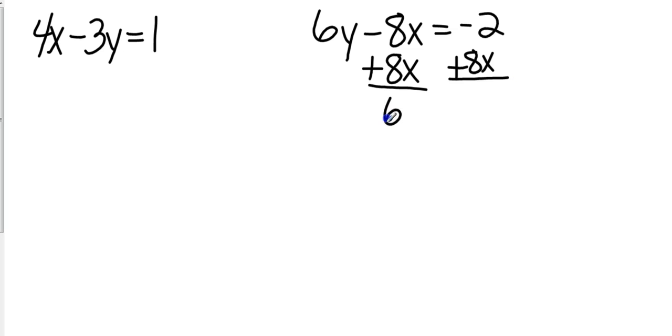That's going to give me 6y, those cancel, equals 8x minus 2. I'm going to divide both sides by 6.